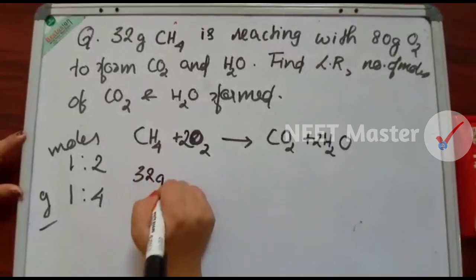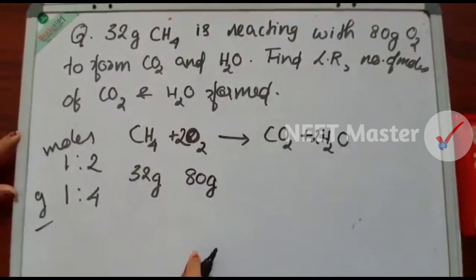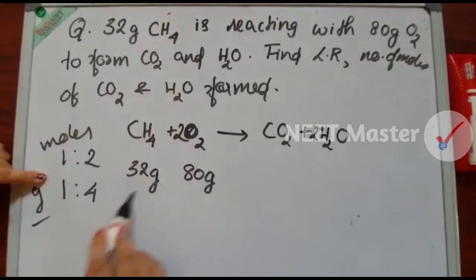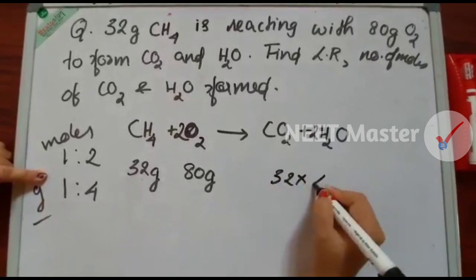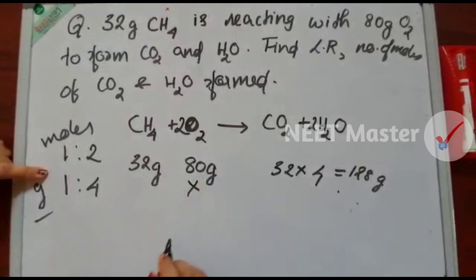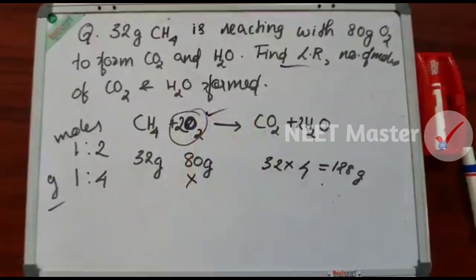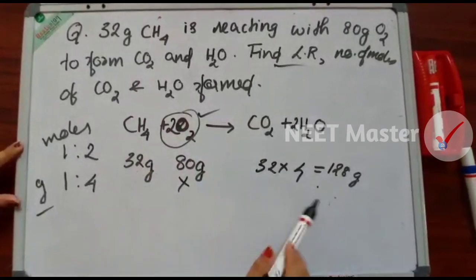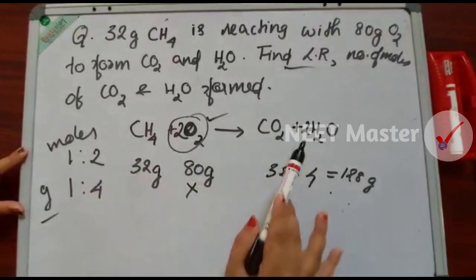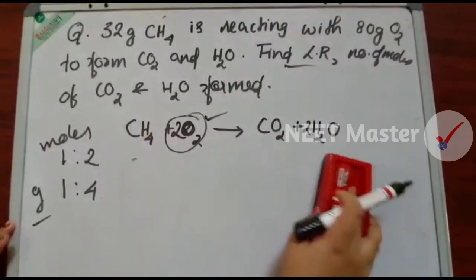32 grams of methane is reacting. We will take a look at the ratio of 1 to 4 — how much is it? 128 grams of oxygen. We will take a look at the volume of oxygen. The 1:4 ratio means we need 128 grams of oxygen. Since we have only 80 grams of oxygen, we will take a look at this whole reaction. Oxygen is the limiting reagent — it's 80 grams.